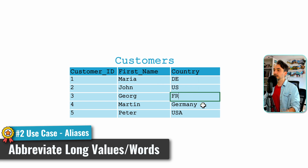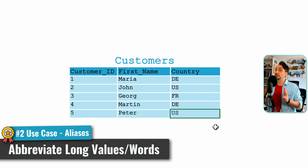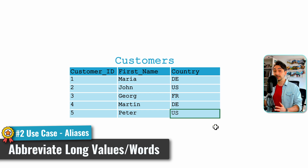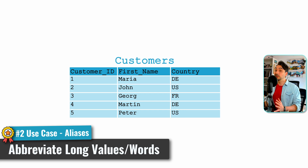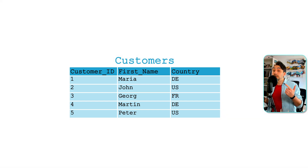Here again we have the same situation: either go back to the original dataset and change the values, or stay in Tableau and do it directly using aliases. In real projects you cannot go back to the source system each time — either you don't have the time or you simply cannot do it. That's why we always end up changing those values directly in Tableau.